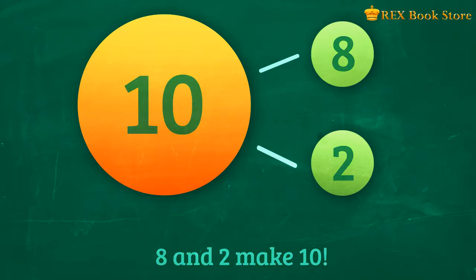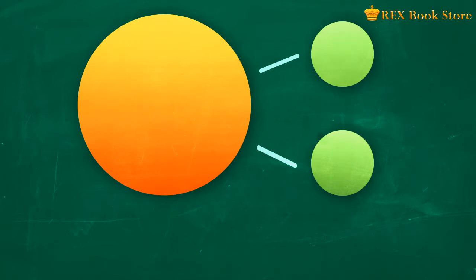This time, we're missing the whole number. What do you think it is? Correct! 1 and 3 make 4.